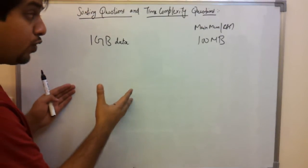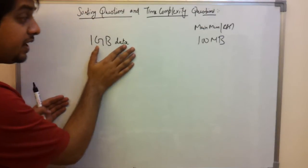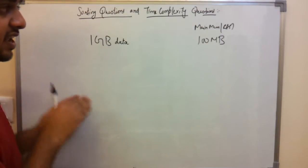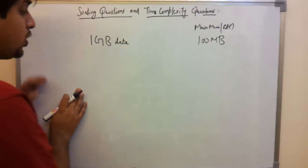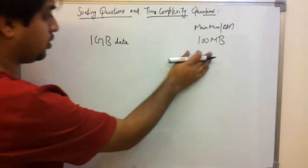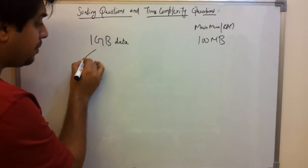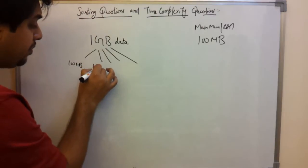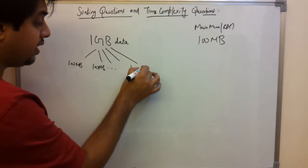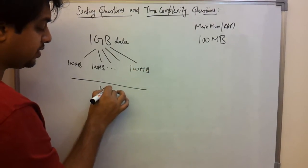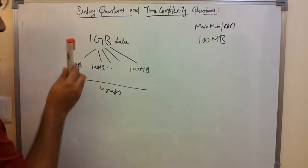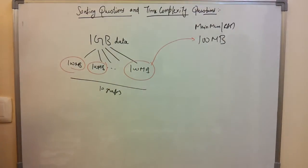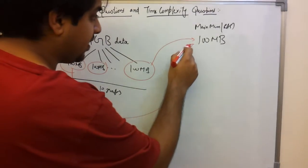Let's say you have 20 elements and those 20 elements represent 1 GB of data. You can only fit 100 MB of data in main memory at a time — 1000 MB equals 1 GB — so you cannot load everything at once.